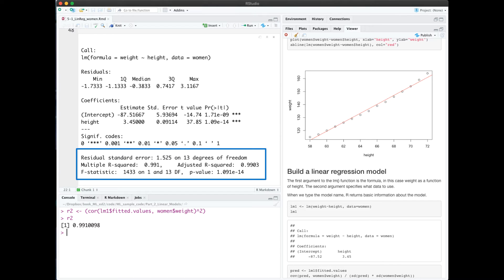The R squared statistic for simple linear regression when we just have one predictor is the same as the correlation squared. So I've computed that manually here. I've taken the correlation between the fitted values and the true values and square that to get R squared, which is 0.991, the same value that's here.